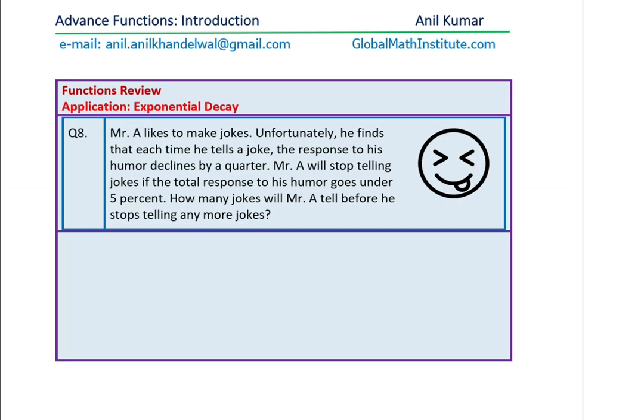Question number eight. It is an application question based on exponential functions. Mr. A likes to make jokes. Unfortunately, he finds that each time he tells a joke, the response to his humor declines by a quarter. Mr. A will stop telling jokes if the total response to his humor goes under 5%. How many jokes will Mr. A tell before he stops telling any more jokes? That is what we deal with. You can always share with me your comments and thoughts on the email given. It helps us to relate with the real life situations and to model with functions which we have already learned.